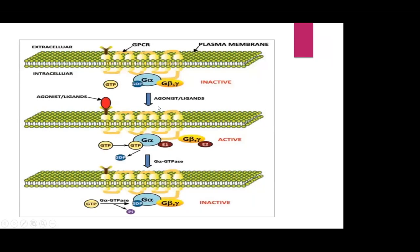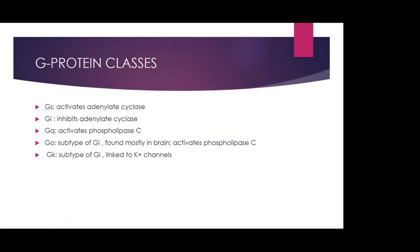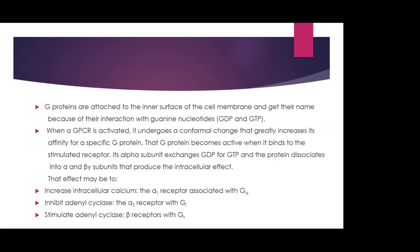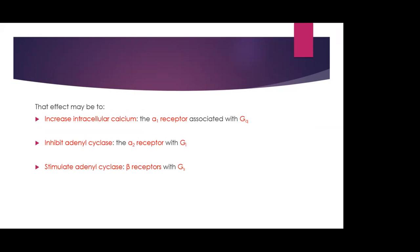The G-alpha unit is one moiety and G-beta-gamma combined is the second moiety. Once activated by an agonist ligand, G-alpha-GTP gets detached and G-beta-gamma detaches, and then G-alpha-GTP brings about changes through second messengers. G proteins are classified depending on what the G-alpha moiety does: stimulatory GS activates adenylate cyclase, GI inhibits adenylate cyclase, and GQ activates phospholipase C. The alpha-1 receptors act by activating GQ, increasing intracellular calcium. Alpha-2 receptors act via GI, inhibiting adenylate cyclase. Beta receptors act via stimulatory GS, stimulating adenylate cyclase and increasing cyclic AMP.